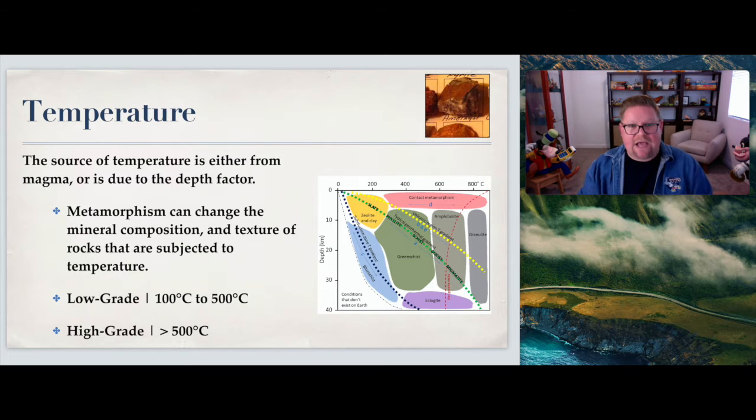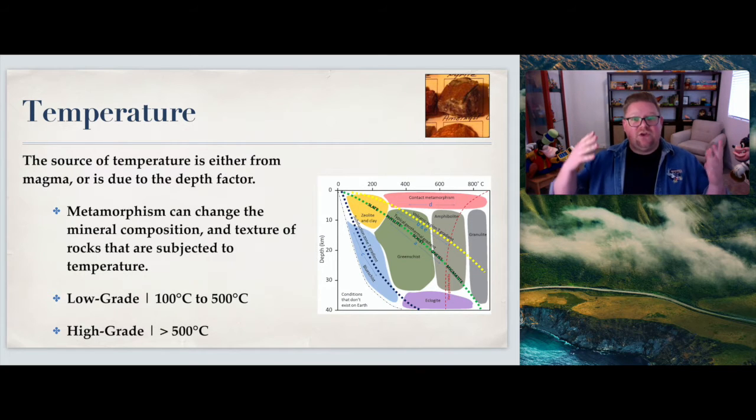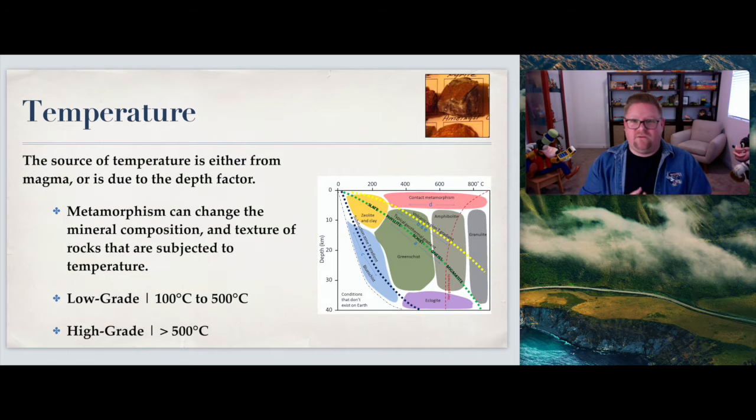So what are some of the attributes or elements behind metamorphism? The first one is temperature. The source of the temperature is either from magma itself or is just due to the depth factor. As you have things that are buried, you're going to have heat from around there, but you're also going to have pressure, and as the pressure is pushing down, pressure creates heat.